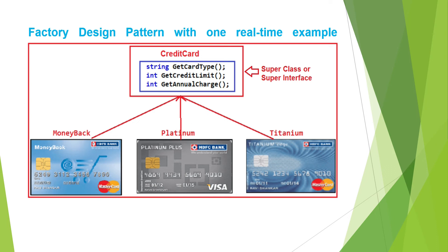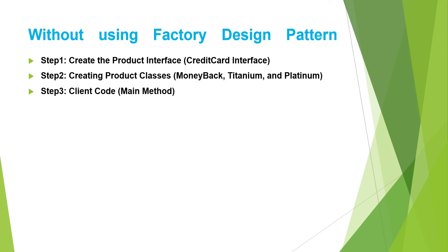Our business requirement is: we will ask the user to select the credit card type, and once the user selects it, we need to display the required information. For example, if the user selects the MoneyBack credit card, all three methods implemented inside MoneyBack should be executed. Similarly, if the user selects Titanium, then the methods inside the Titanium class should execute. We will first achieve this without using the factory design pattern, discuss the problems, and finally create the same application using the factory design pattern.